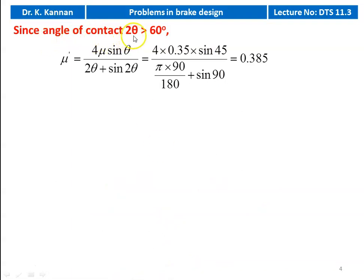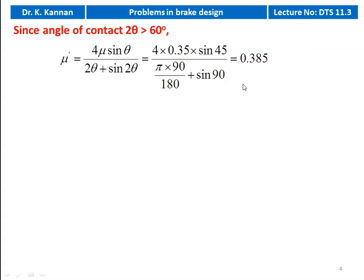Since the angle of contact 2θ is greater than 60 degrees, we have to correct the coefficient of friction. So μ' = 4μ sin θ / (2θ + sin 2θ). Substituting numerical values: 4 × 0.35 × sin 45 / (π × 90/180 + sin 90) = 0.385. This μ' value is to be used in all the calculations.